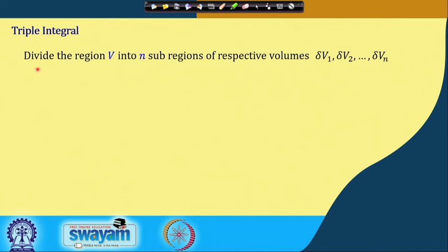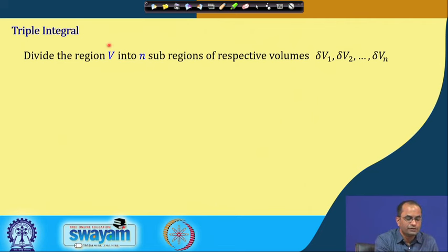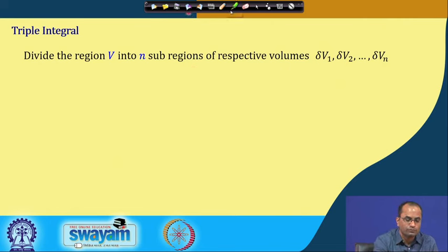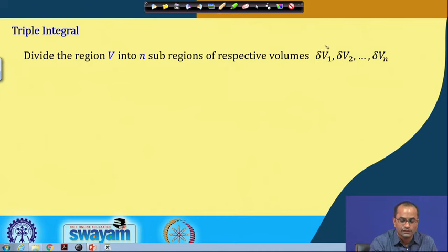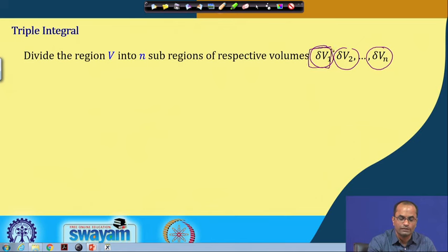First, how to define the triple integral. Similar to what we have done for double integrals, we will divide the given region. Now our region will be three-dimensional. We divide that region into n sub-regions and denote the volume of these sub-regions as delta v1, delta v2, ..., delta vn.